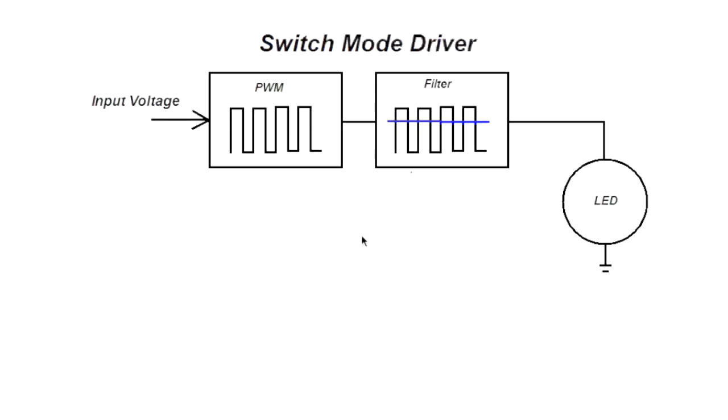There are two stages to the switch mode driver. There's an internal PWM or Pulse Width modulator, and also an internal filter. The Pulse Width modulator generates a fairly high frequency square wave. And the PWM output is filtered out by a coil and capacitor combination. And that results in a constant current to the LED. The surefire way to tell if you have a switch mode driver or not is the presence of one or more coils and capacitors.